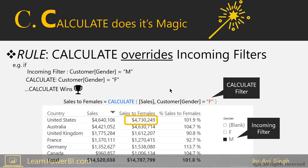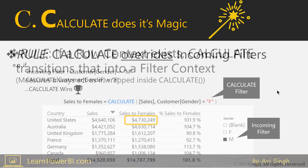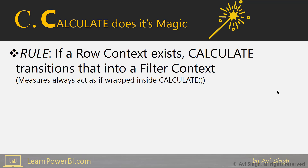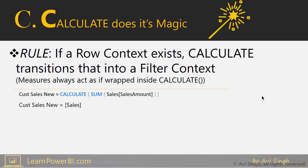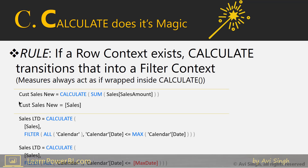It's the magic wand — CALCULATE wins. And that's why in the cell it's actually showing the sales to female customers, Customer[Gender] equals F. The second rule to remember is: if a row context exists, CALCULATE transitions that into a filter context. We have seen that in the example of our calculated column and the Sales LTD measure. And remember this part: measures always act as if wrapped inside a CALCULATE.